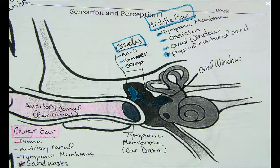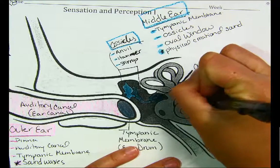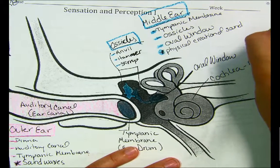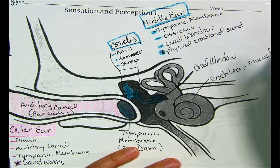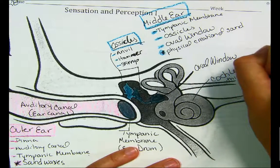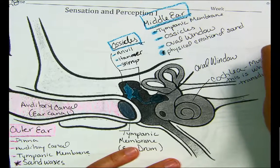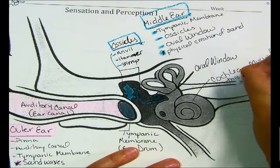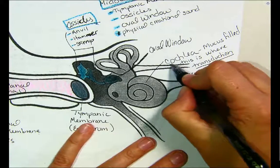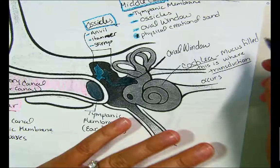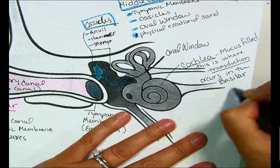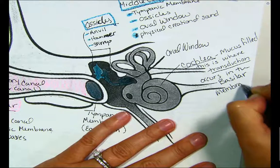The oval window is connected to the cochlea — C-O-C-H-L-E-A. Your cochlea is filled with a liquid — mucus. This is where transduction occurs, specifically in the basilar membrane. I'm going to explain all of this in just a second, but write that down first.